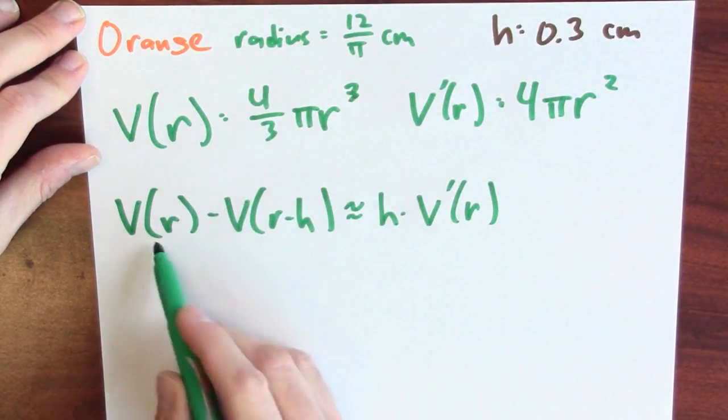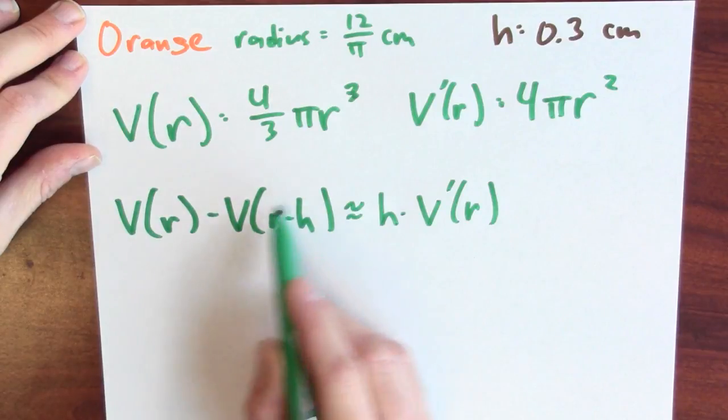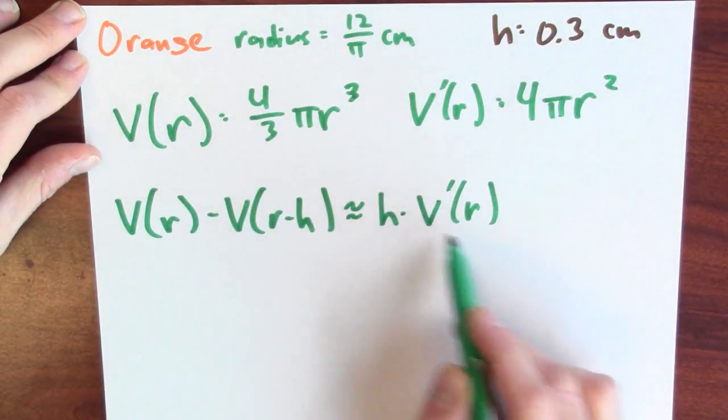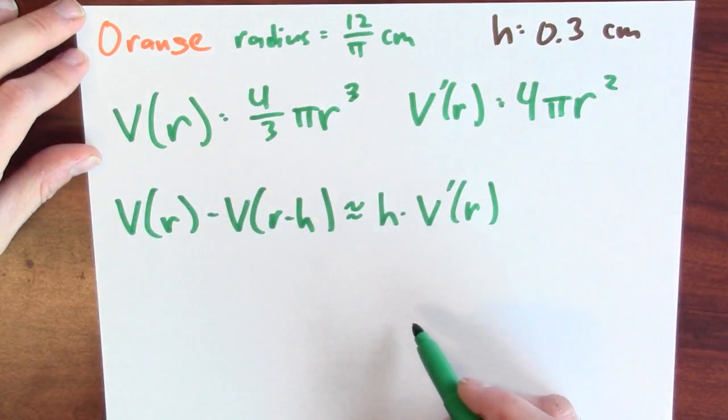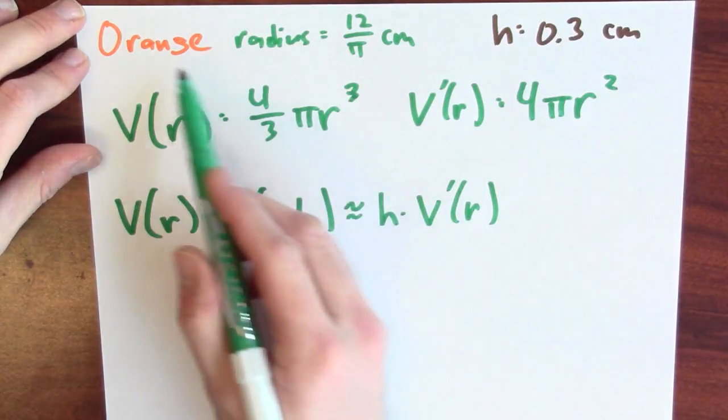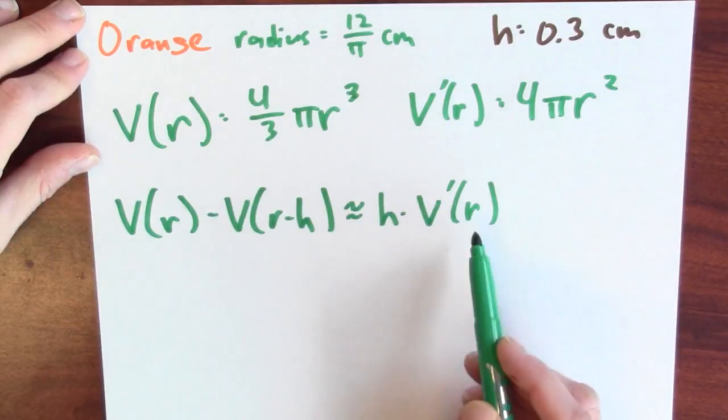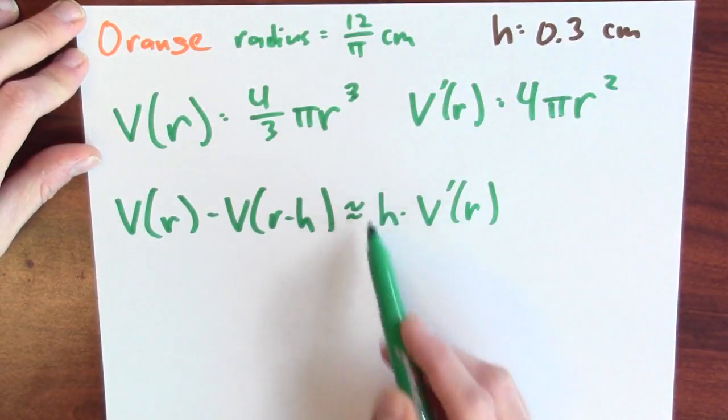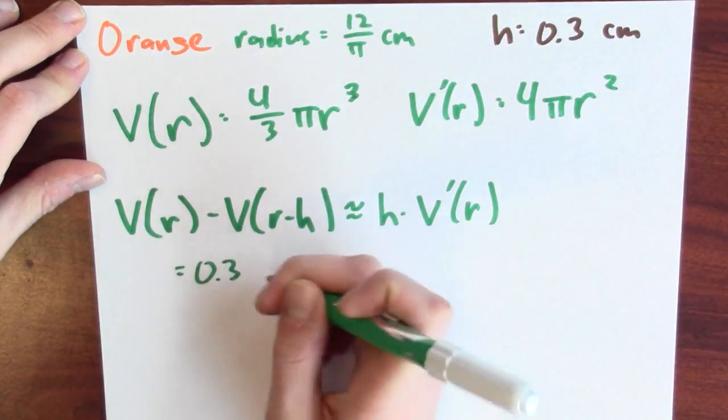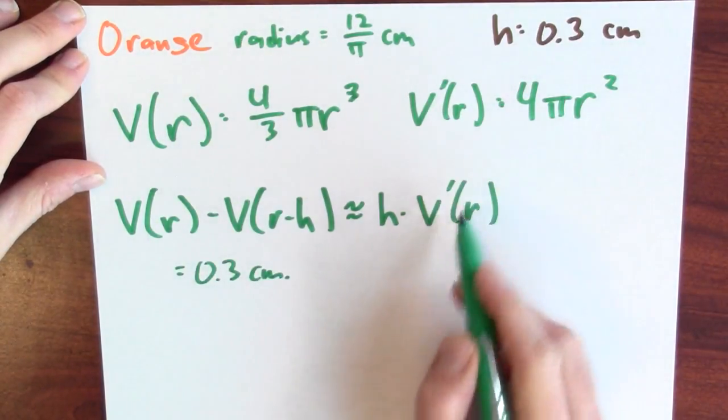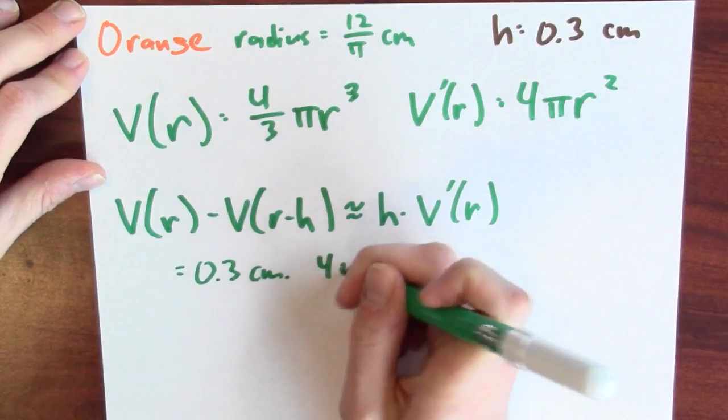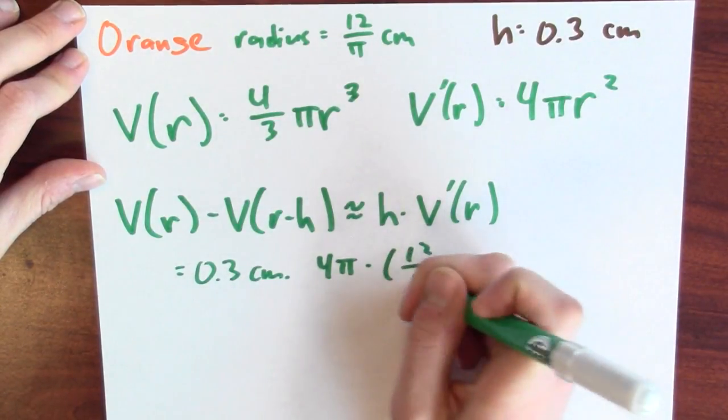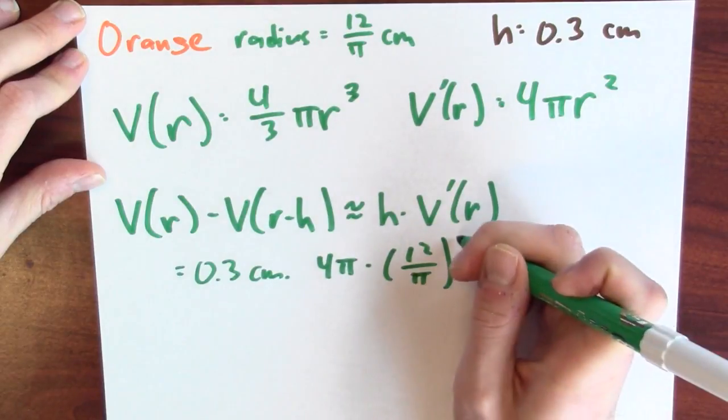And approximately, this is h times the derivative of V at r. Because this is asking how does the output change when the input goes from r minus h to r, and that's approximately the input change times the derivative. Now in this case, the orange's radius is 12 over π, so I'll use that for r. And the rind's thickness is 0.3 centimeters, so I'm going to use that for h. So this is 0.3 centimeters times 4π times this radius, which is 12 over π centimeters squared.